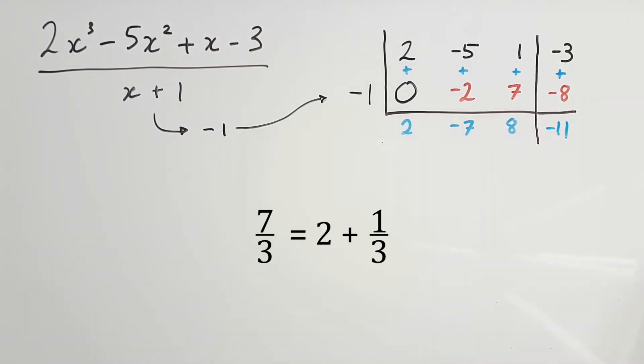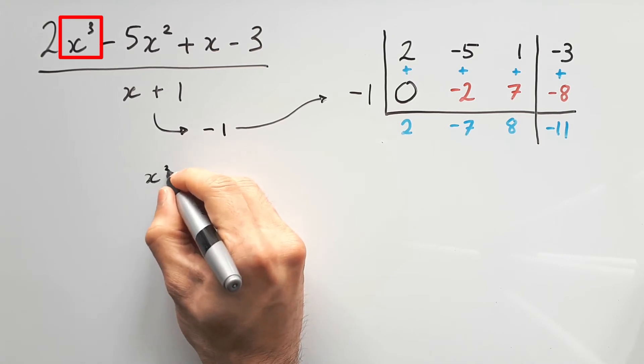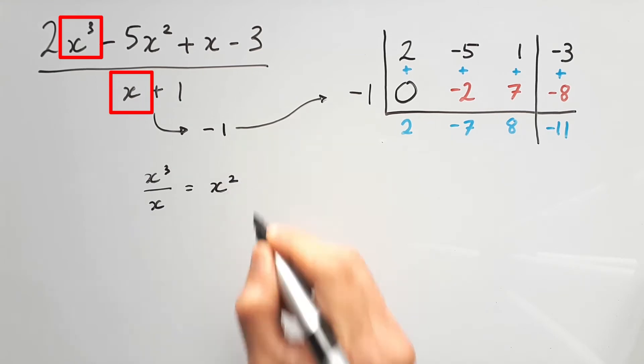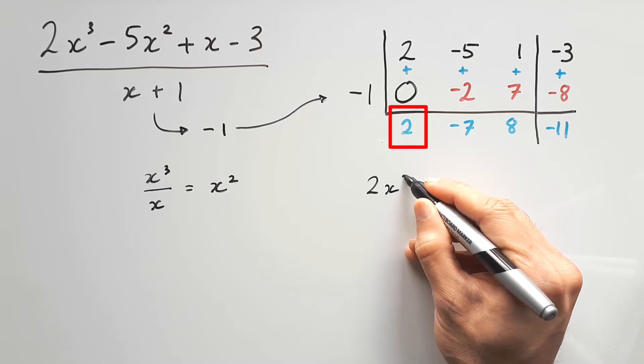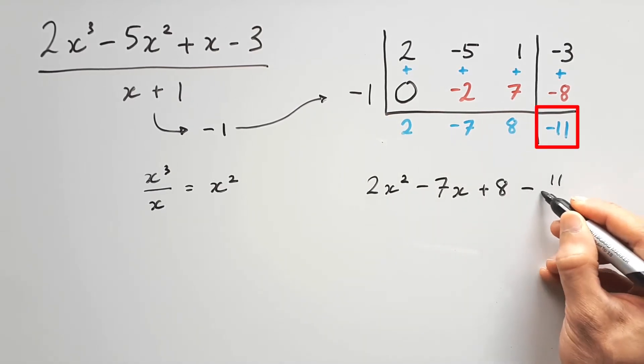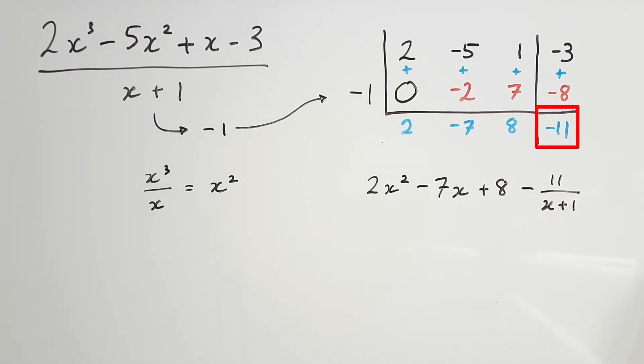Whenever we do a division, it usually gives us a quotient and a remainder. Here, 2, negative 7, and 8 are coefficients of the quotient, while negative 11 is the remainder. The quotient is usually a cubic or a quadratic. To figure out which one it is, take the highest power from your numerator and divide the highest power from the denominator. This leaves us with x squared. So we need to write a quadratic expression, meaning it's 2x squared minus 7x plus 8, and we minus 11 over the original divisor to complete our answer.